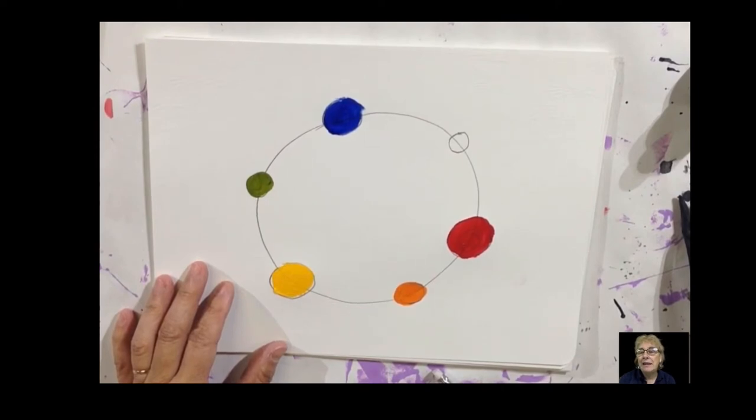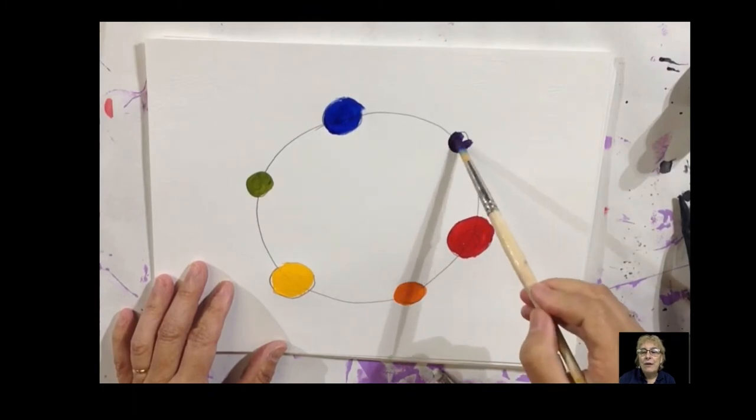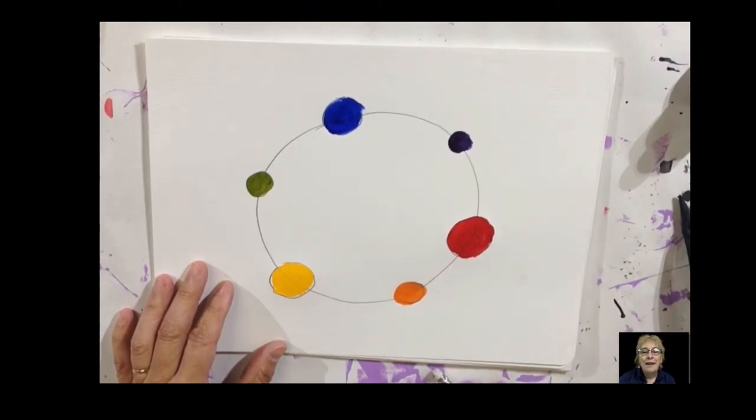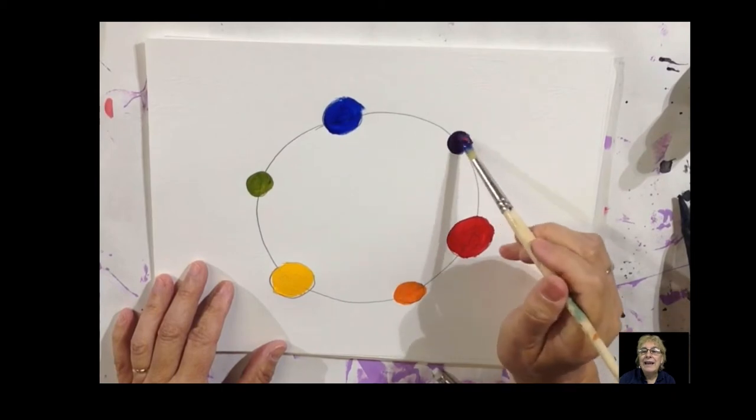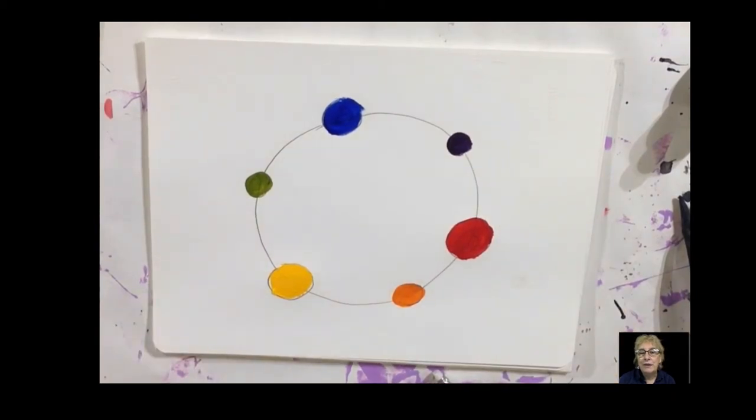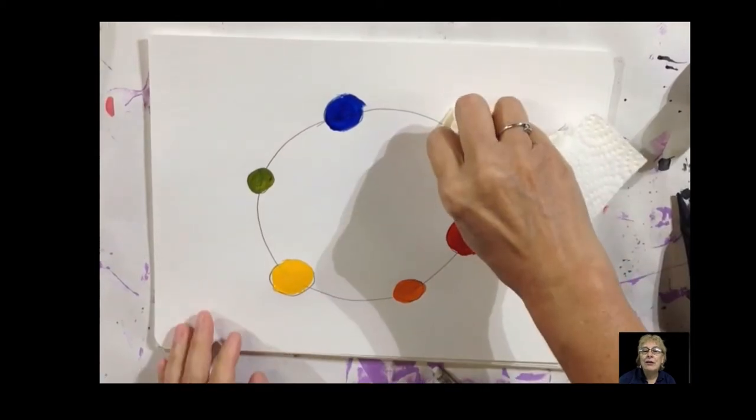But here I'm adding words to these exercises. Yellow and blue make green, and that's a complementary color. Blue and red make purple, and that's a complementary color.